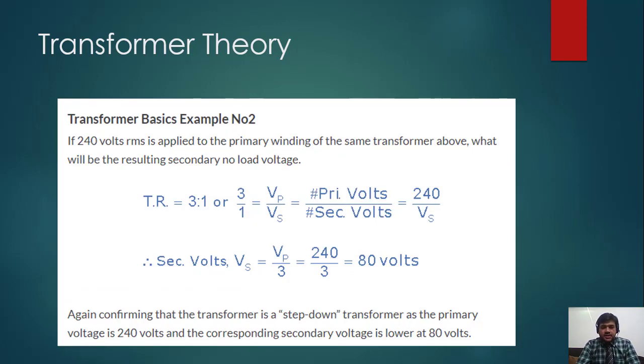Here is the second example I have solved for you. If 240 volt RMS is applied to the primary winding of the transformer above, what will be the resulting secondary no-load voltage? You can see yourself, this is a very simple example.